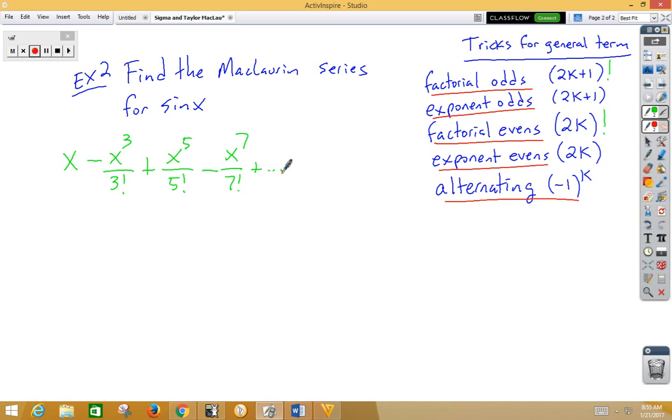So let's take a look at our general term. First of all, the series is alternating, so we're going to want to include in our general term negative 1 to the k.